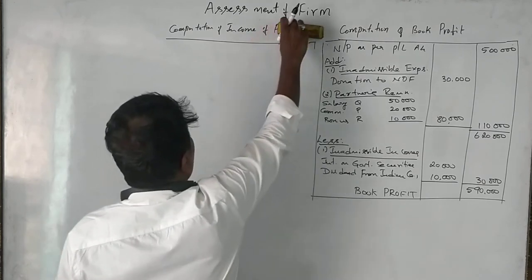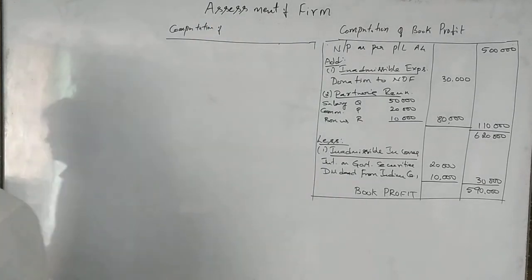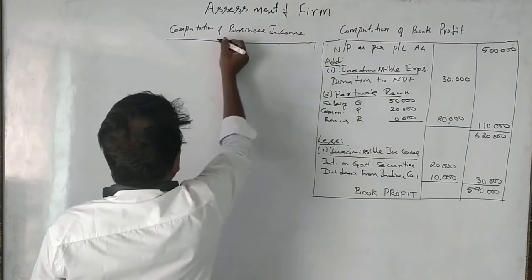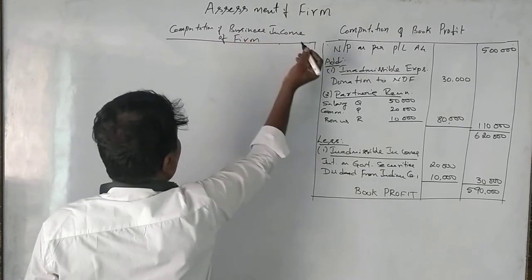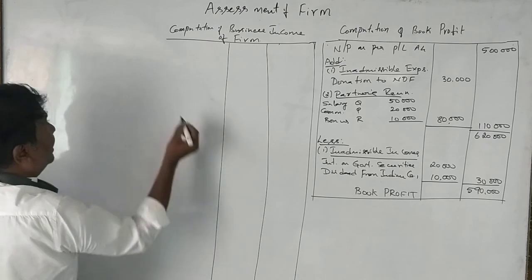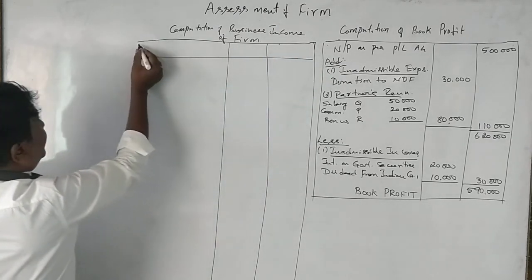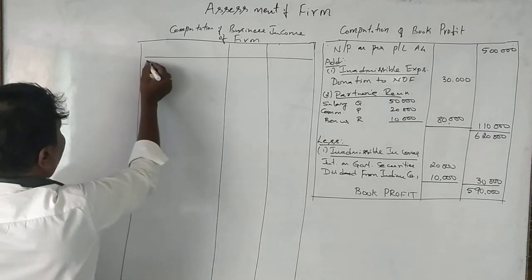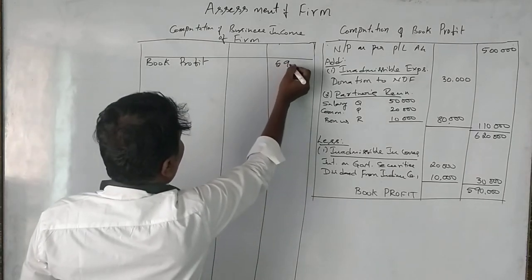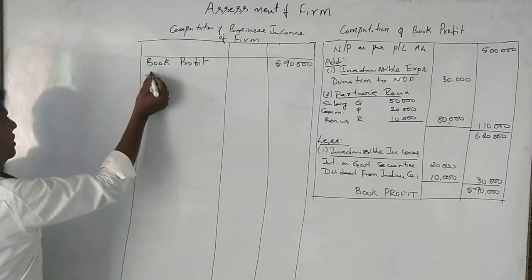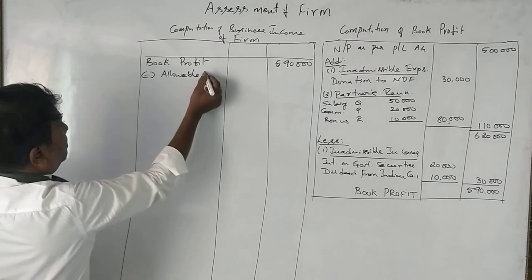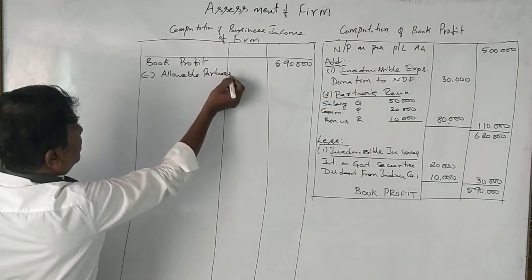Now we move to the calculation of Business Income of the Firm — not total income, but specifically Business Income. When calculating the Business Income of the firm, we first take the book profit, which we calculated as 5,90,000 rupees. From this, we have to deduct the allowable partners' remuneration.